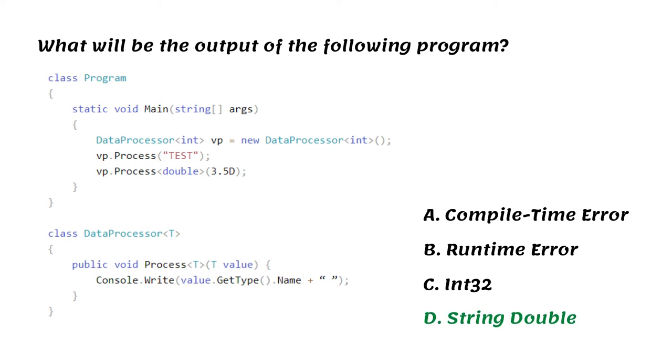Here, data processor class and process method both are generic denoted by T symbol. Although a different symbol for the different generic members of the same class is recommended, the same symbol is allowed. So, data processor VP sets the type for the class, and the type for the process method is decided based on the type of the value passed during the call if not specified explicitly using angle brackets.